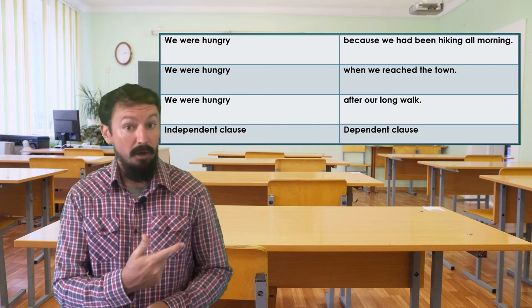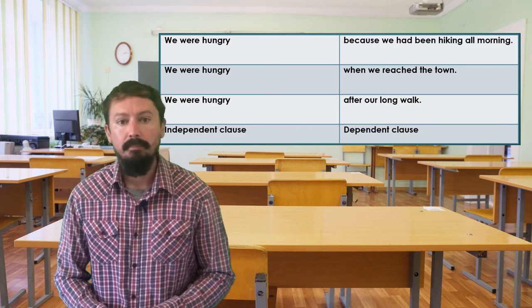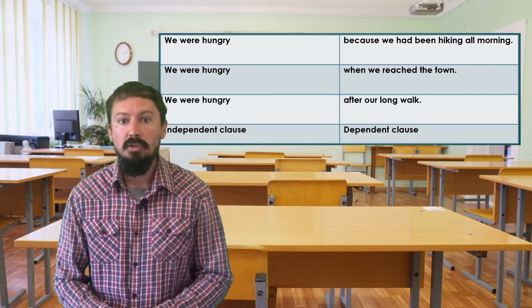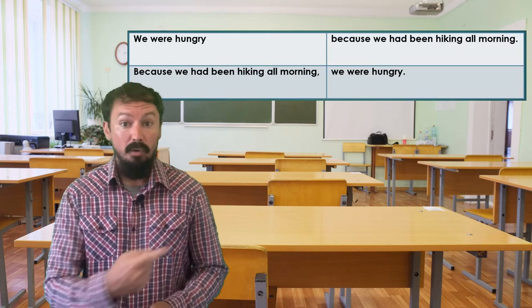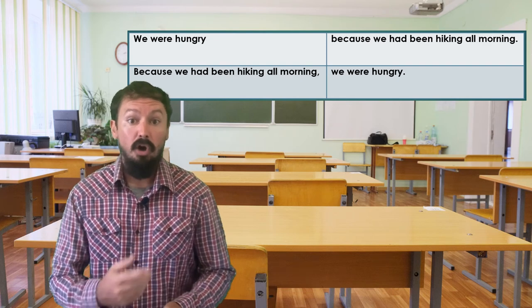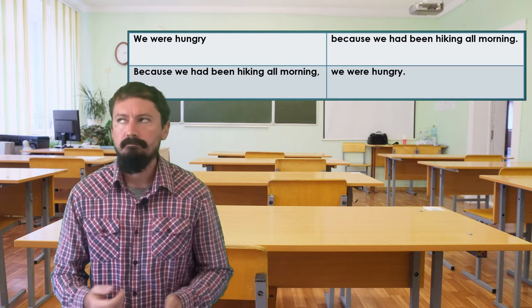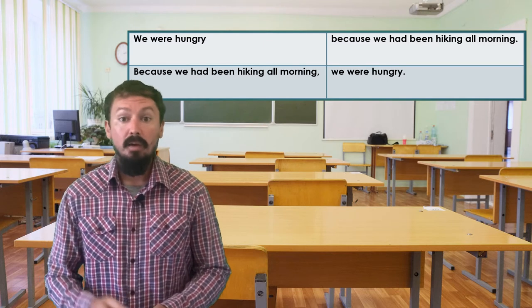We can see how this works by taking 'we are hungry' and adding all kinds of ideas to it. It is worth noting that whilst dependent clauses must be attached to independent clauses, they don't necessarily have to come first — we can change the order. Note in the examples that there is a comma after the dependent clause in the second sentence, but not in the first. When we put a dependent clause first, it will be followed by a comma. When it comes second, there should be no comma.